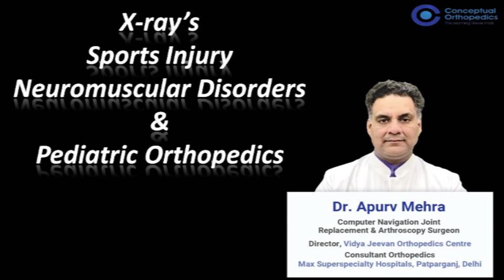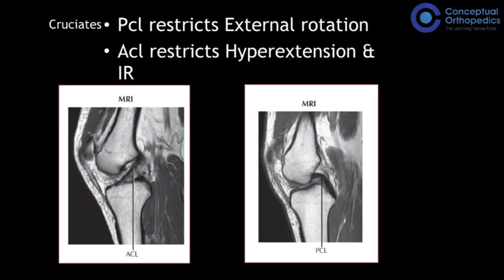Let's talk about the knee sports injury. Knee injuries usually occur on rotation on a flexed knee, and the injured structures are usually the ACL, medial collateral ligament, and medial meniscus. MRI is a very important tool for evaluating these injuries.